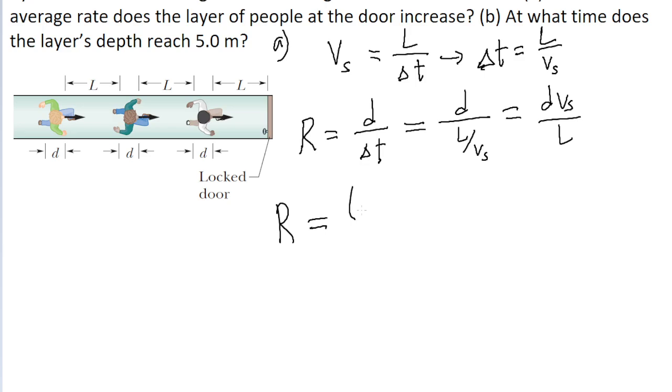The depth of one person is 0.25 meters, the speed at which the people are moving is 3.5 meters per second, and the value for L, the distance between them, is 1.75 meters. If we put this into a calculator, we find a rate of 0.5 meters per second.